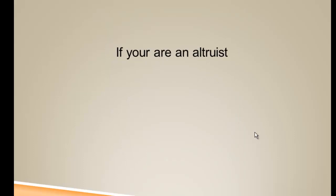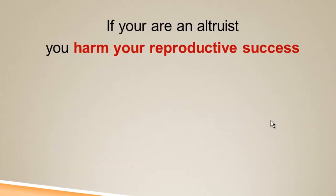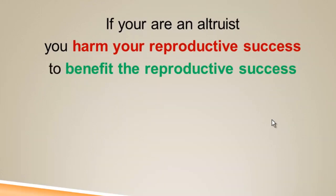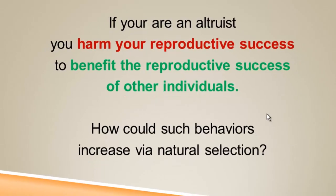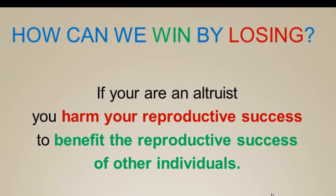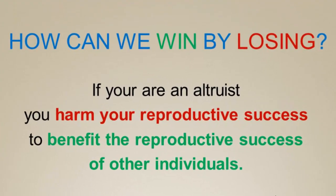The puzzle of altruism is that if you are an altruist from a Darwinian perspective, you harm your own reproductive success to increase the reproductive success of other individuals. The question is how that could possibly evolve or be sustained by natural selection. It would appear that selection would continually act against the altruist and slowly eliminate altruists from populations. We posed this earlier as: how can we possibly win by losing?